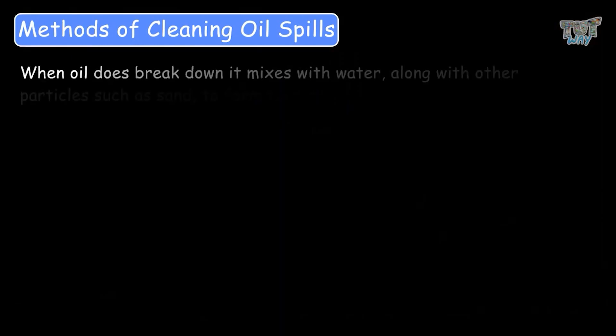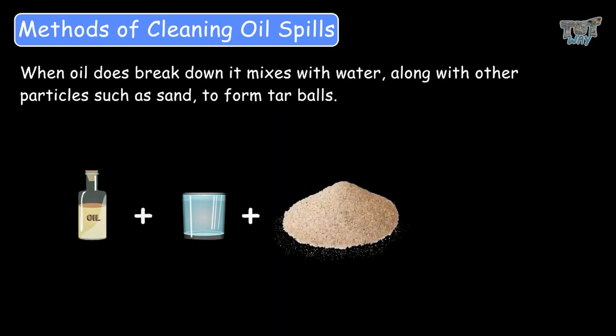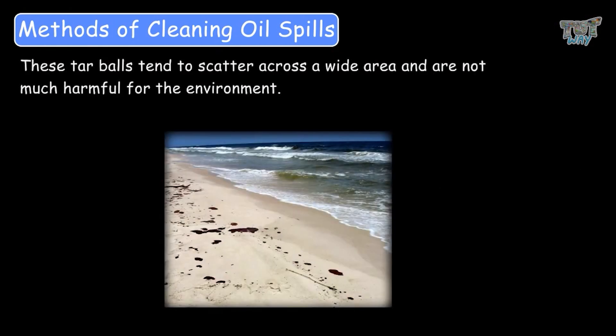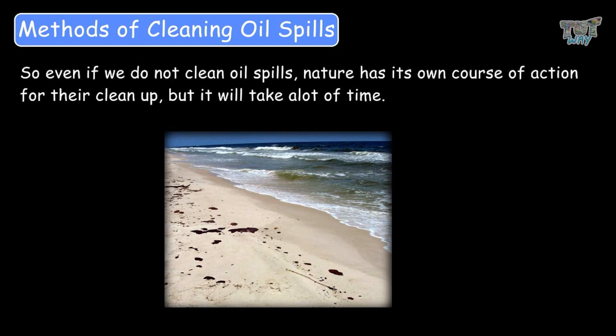When oil does break down, it mixes with the water along with other particles such as sand to form tarballs. These tarballs tend to scatter across a wide area and they are not very harmful for the environment. So even if we do not clean up oil spills, nature has its own course of action.